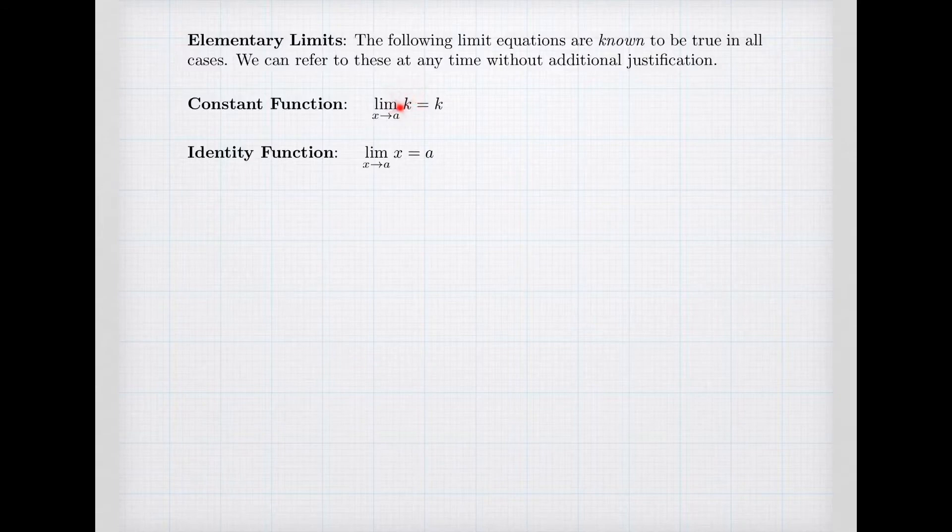We have two basic functions that we always have limits of. A constant function, where the limit has a constant inside—as x goes to any number, the limit is always that same constant. The second is the identity function. The identity function is just the variable, f(x) equals x. So if x by itself is in a limit, and x is going to a number, then the limit is that number x is going to. This is the limit of the identity. These are our basic elementary limits.